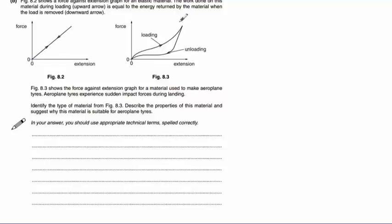It also shows us figure 8.3 here, which is the extension against force graph for a material used to make aeroplane tyres, which experience sudden impacts during landing. You can see the difference here is that the loading and unloading sections of the graph are different. There is a lower force exerted during the unloading stage as the extension goes back to zero.